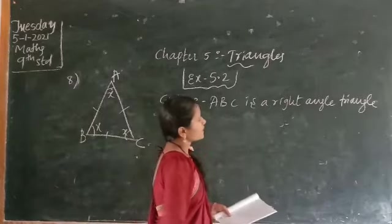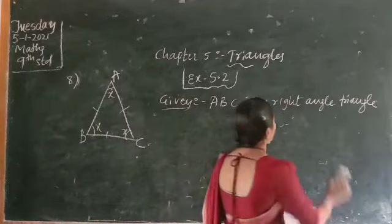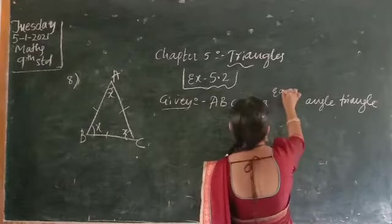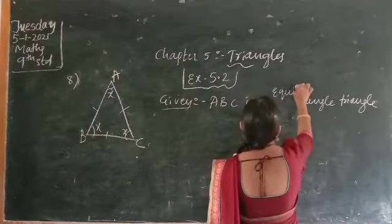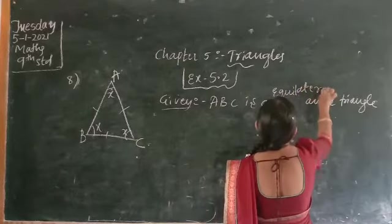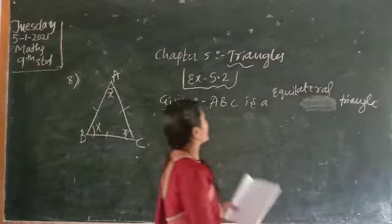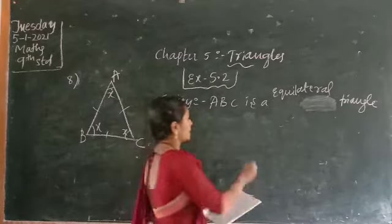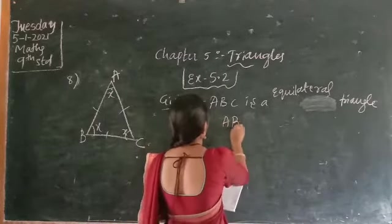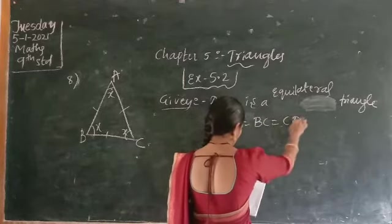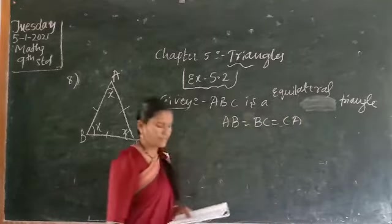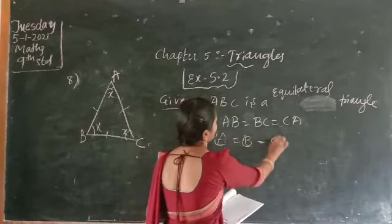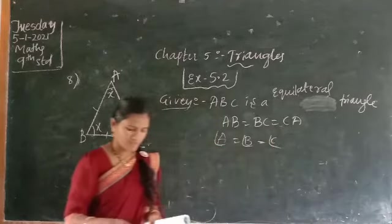ABC is an equilateral triangle. In triangle ABC, AB equals BC equals CA. Therefore angle A is equal to angle B is equal to angle C. You know already the sum of all three angles of a triangle is 180 degrees.